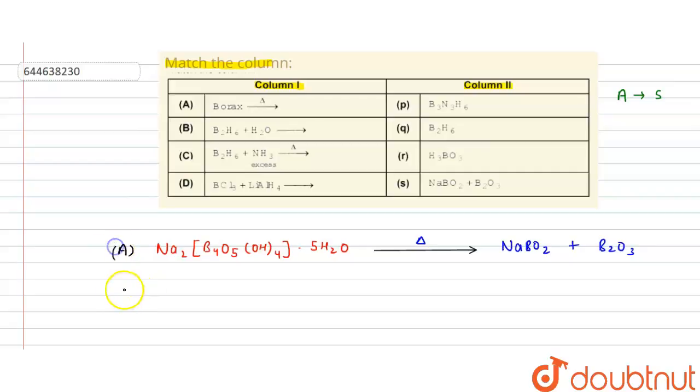Option B says B2O6. So B2O6 reacts with H2O. If B2O6 reacts with H2O, then what is the product? This is a very easy reaction. This gives directly H3BO3 boric acid. So the H3BO3 is R. So B is connecting with R.